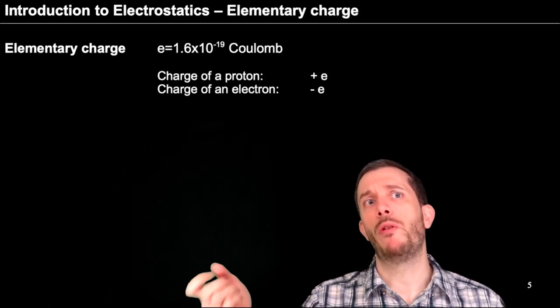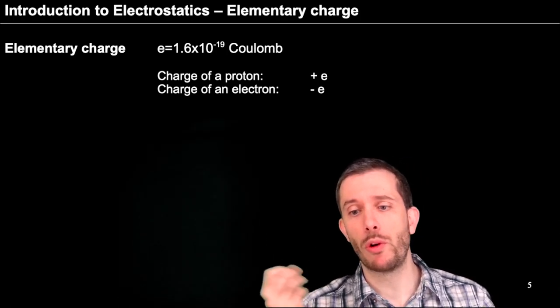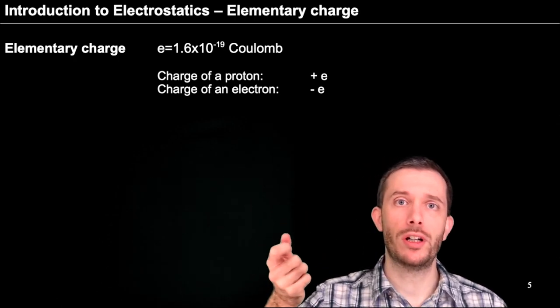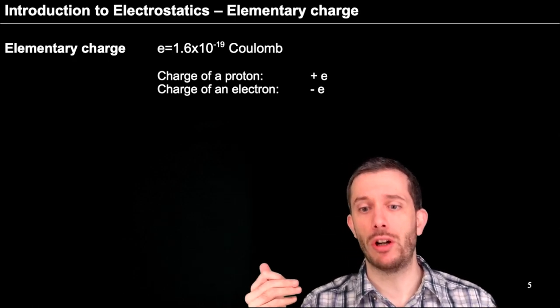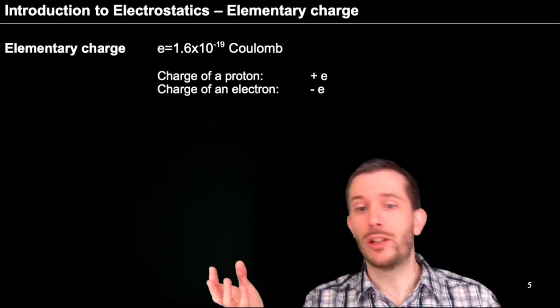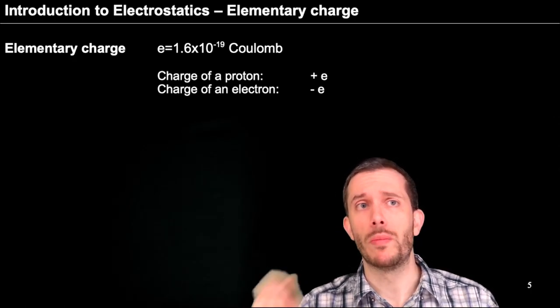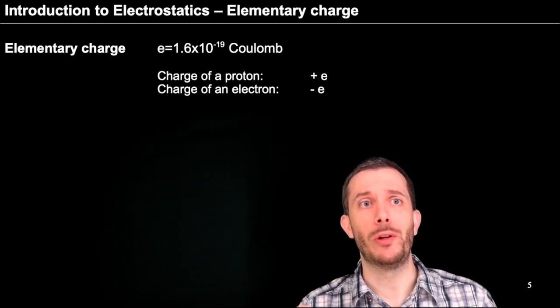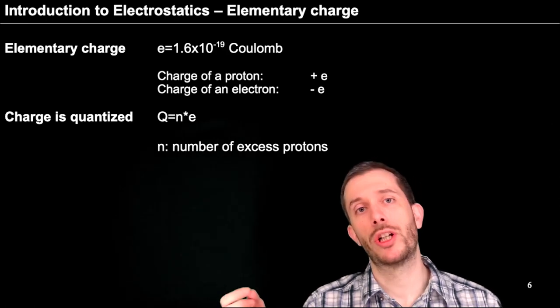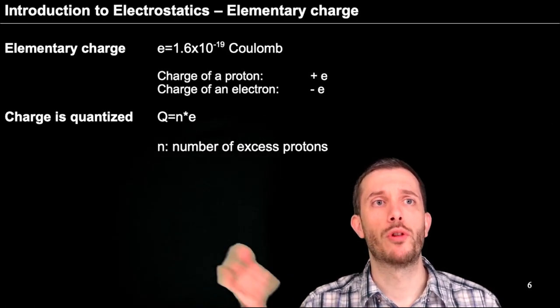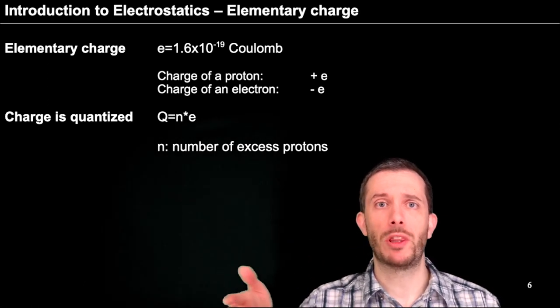Now at this point you might want to know what is the charge of a proton, what is the charge of an electron. A proton is charged plus one elementary charge while the electron is charged minus one elementary charge. And what is an elementary charge? It is 1.6 times 10 to minus 19 coulomb. As our overall charge is made of the difference of the protons and electrons, our charge is quantized.